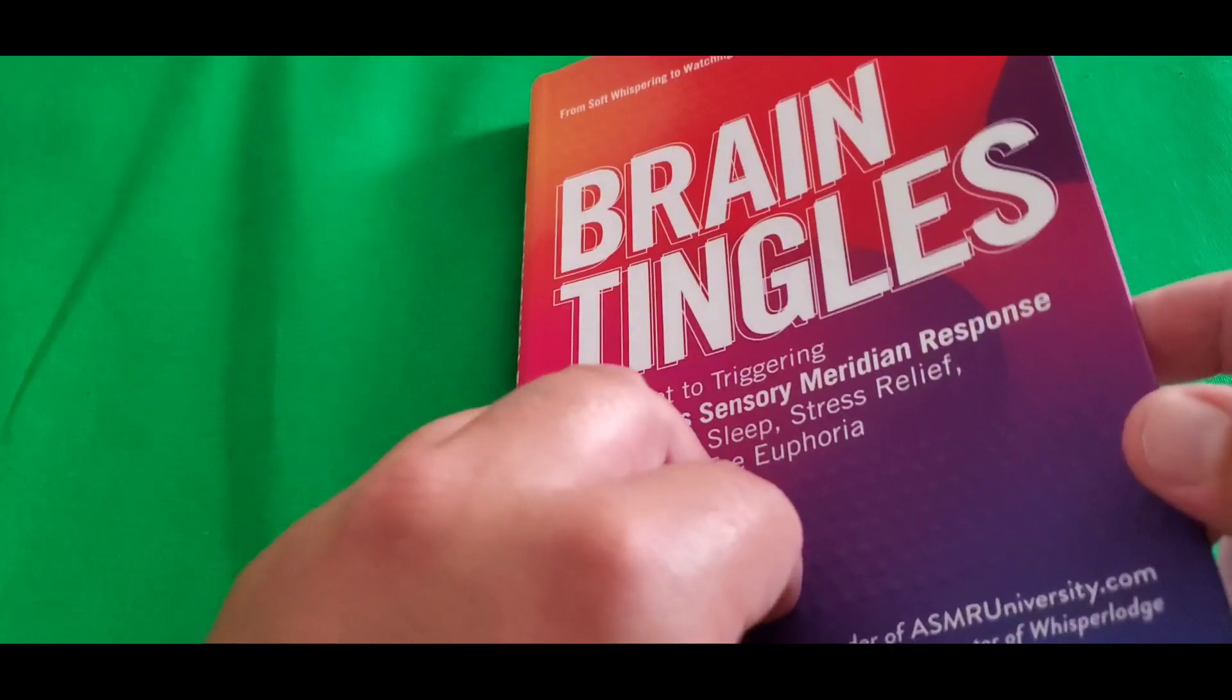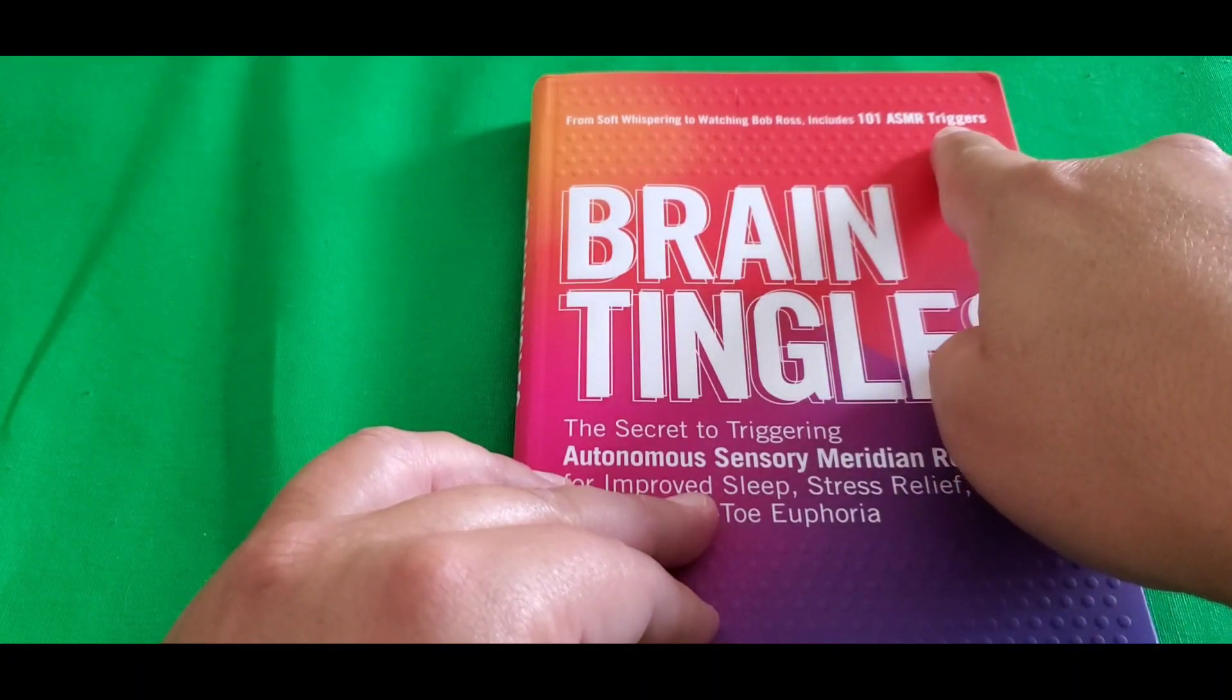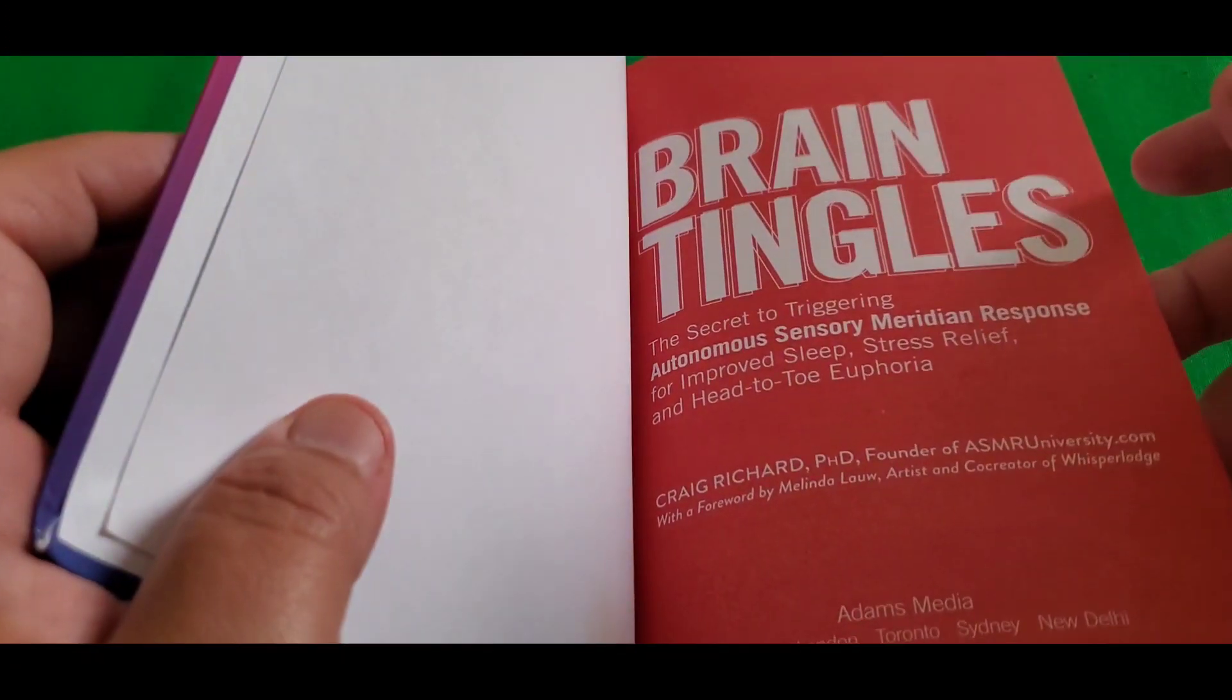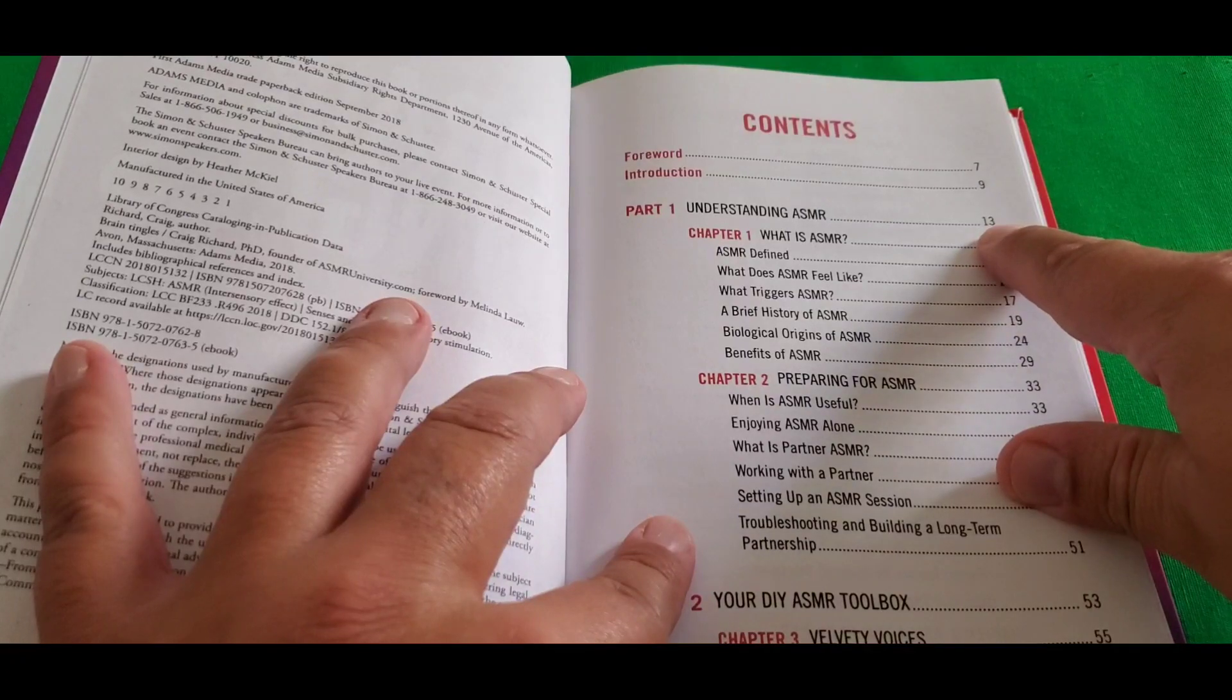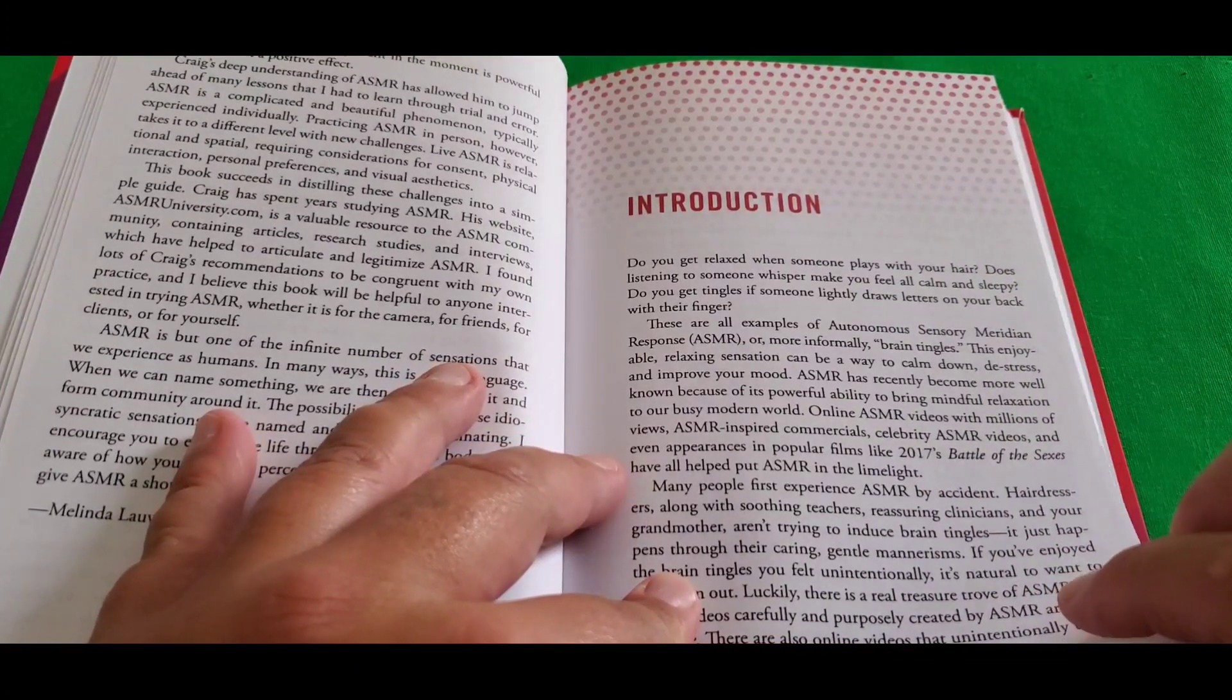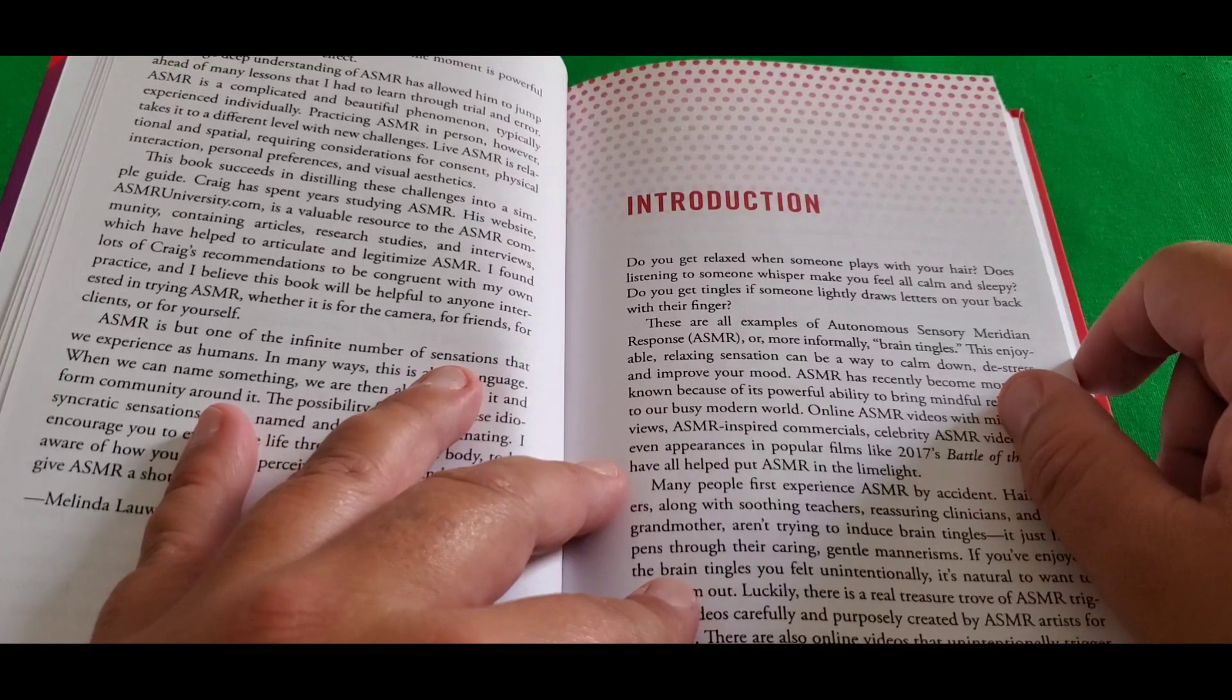So if you want to get a full meaning of what it is, what it does, what's the meaning behind it, then get comfortable and enjoy this reading of what ASMR is. This book is called Brain Tingles, the secret of triggering autonomous sensory meridian response for improved sleep, stress relief, and head-to-toe euphoria. Let's get into it. The introduction.